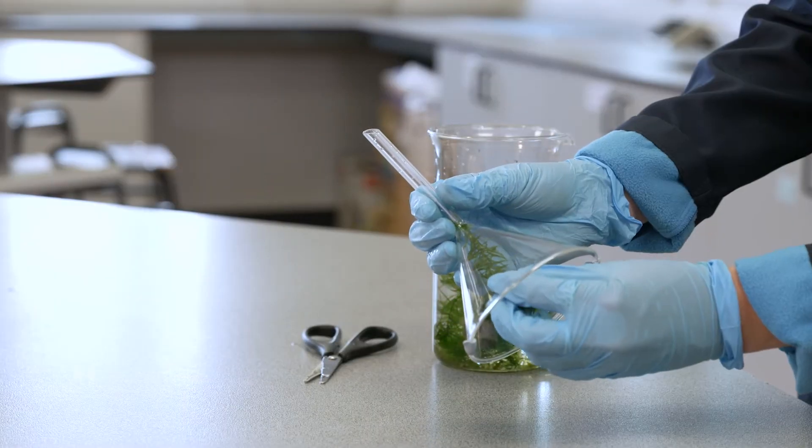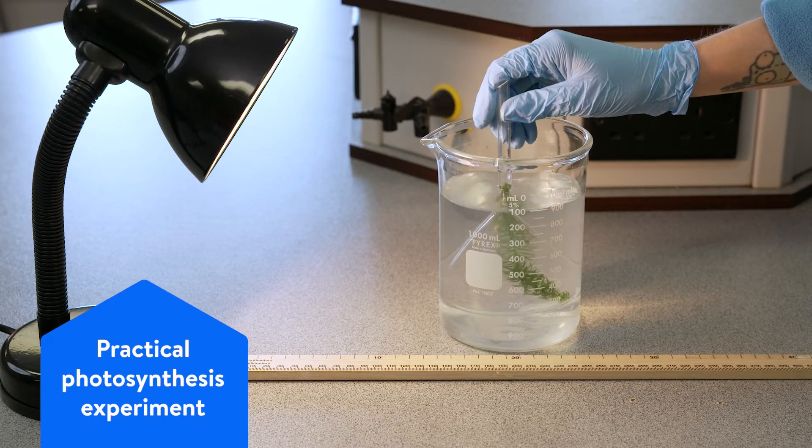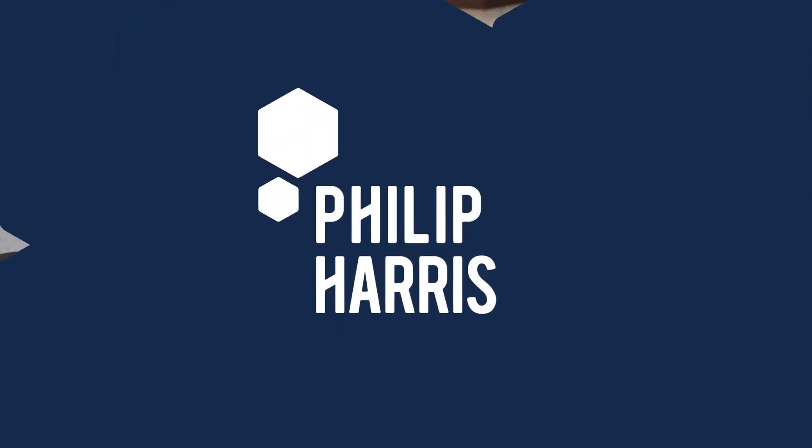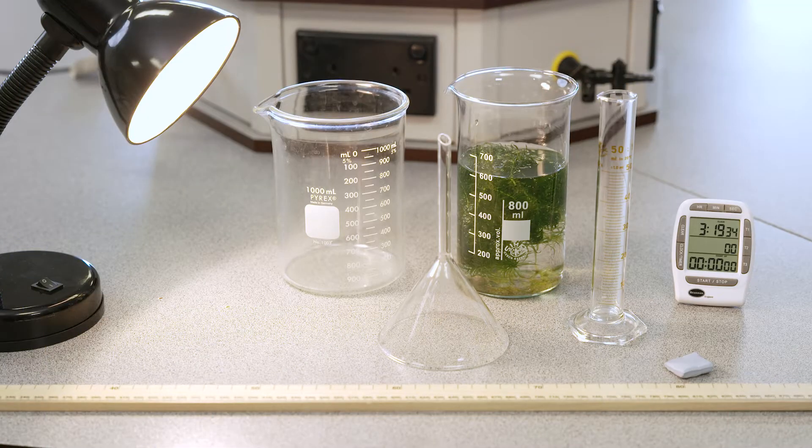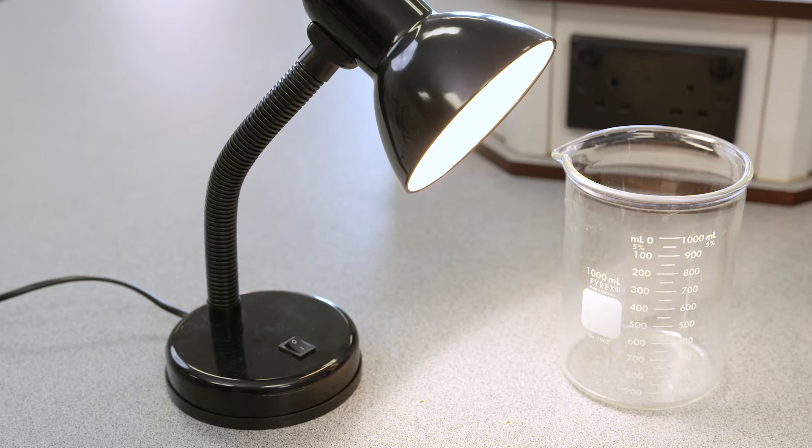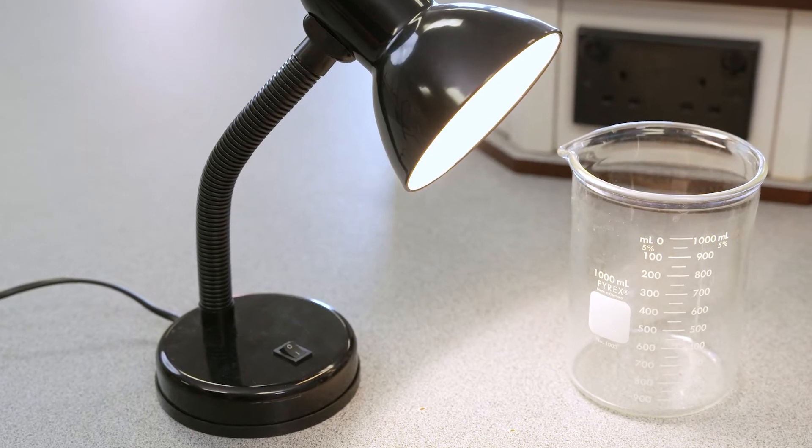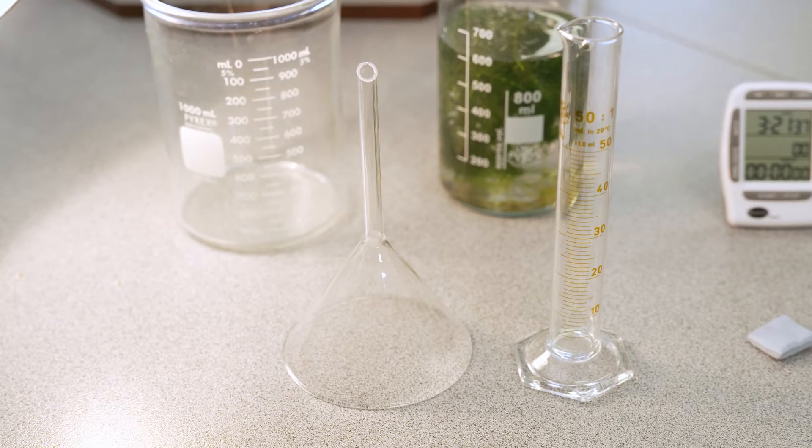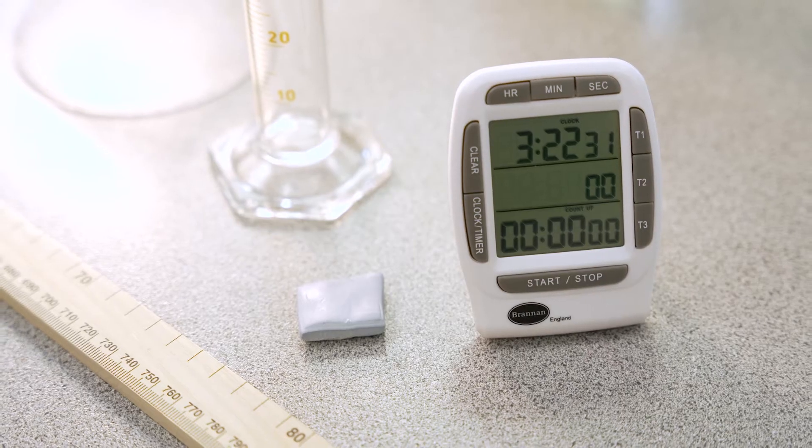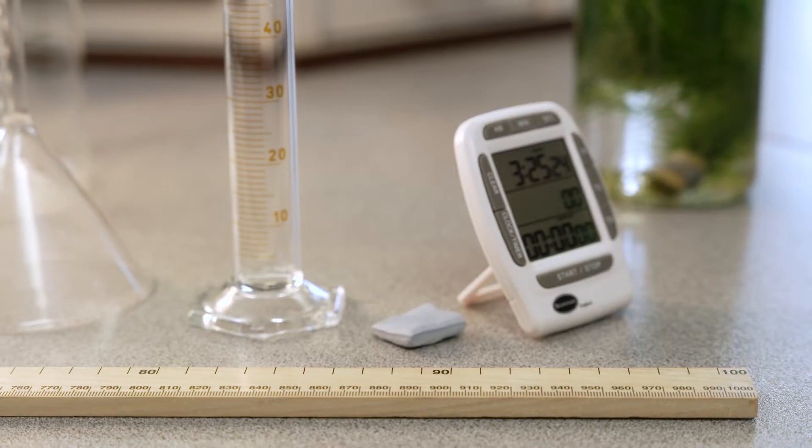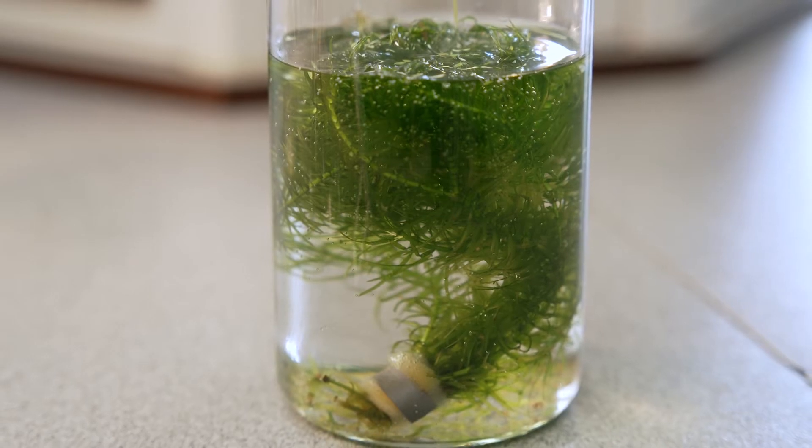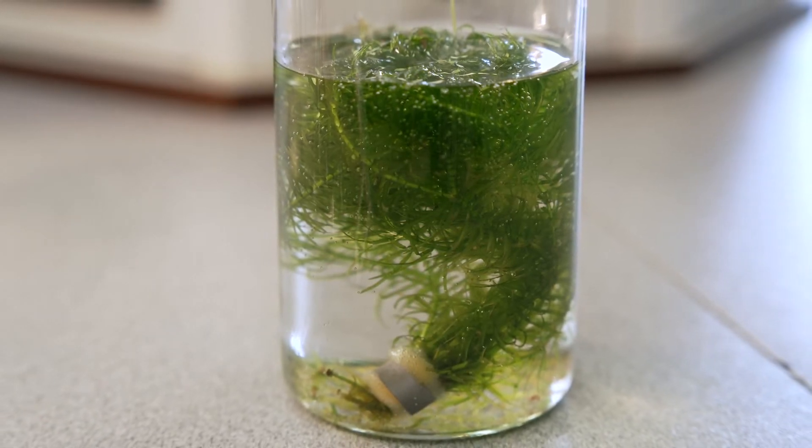Welcome to our video showing you a practical photosynthesis experiment. To carry out this experiment you'll need a light source such as a desk lamp, a beaker of water, a filter funnel, a measuring cylinder, a stopwatch and blue tack, a one meter ruler, and a 10 centimeter piece of pond weed which you can get from most aquatic stores.